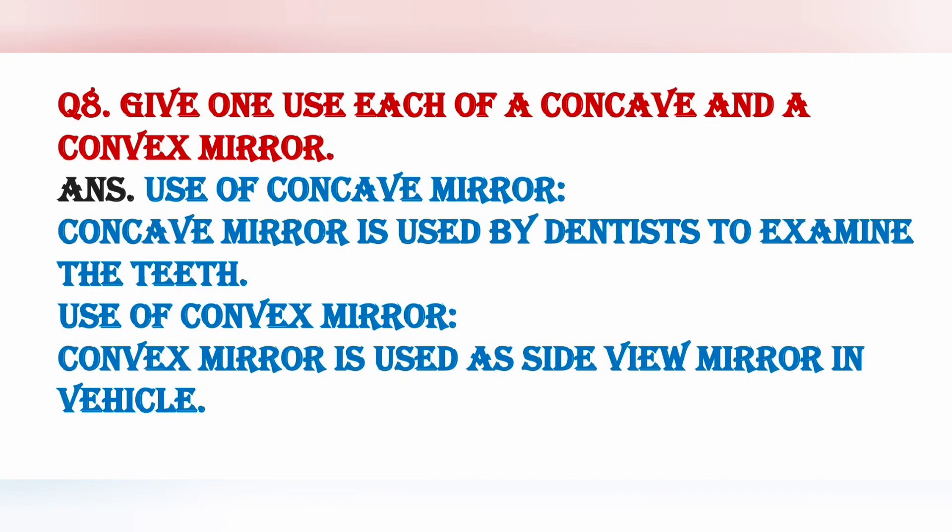Next question: give one use each of a concave and a convex mirror. Concave mirror ka upyog dentist dwara daanton ko examine karne ke liye hota hai, kyunki joh concave mirror hai, woh image ko bada karke dikhata hai, toh doctors easily teeth wagera ko check kar sakti hain. Joh use hai convex mirror ka, woh vehicles mein side view mirror ke taur par use karta hai, kyunki woh image ko chhoti karke dikhata hai, jis se hum ek large area ki image easily dekh sakte hain.